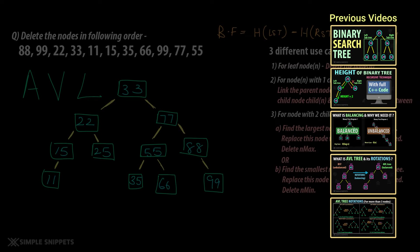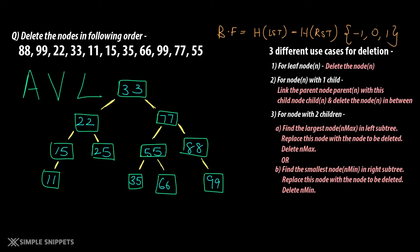I'm assuming you guys already know what is an AVL tree, what is a binary search tree, why it is required to do the balancing and how the insertion happens. This is something that we've been covering in the past few videos in this DSA playlist. In case you have any confusions, please do check that out, and if you've already seen that, you're good to go.